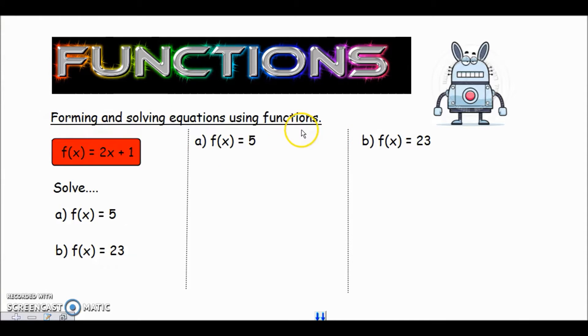In a previous video we were looking at putting numbers into the function. So we've got a function here which is 2x plus 1, so the function is f(x) = 2x + 1. Normally in the previous section we were just putting in numbers where we saw an x.